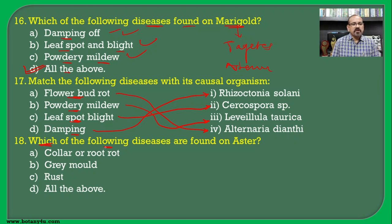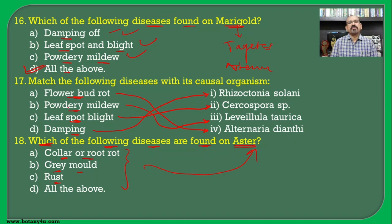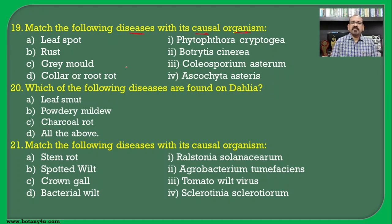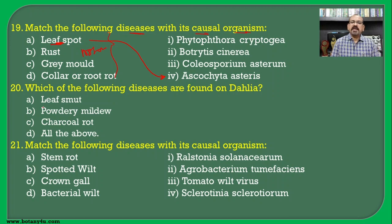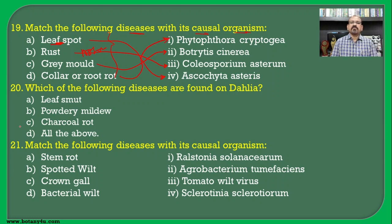Which of the following diseases are found on aster? Collar or root rot, grey mold, and rust — all three are diseases found on aster, hence all the above are the answer. Match the following diseases with their causal organism in aster: leaf spot by Ascochyta asteris, rust by Coleosporium asterum, grey mold by Botrytis cinerea, and collar rot or root rot by Phytophthora cryptogea. All pairs are correctly matched.